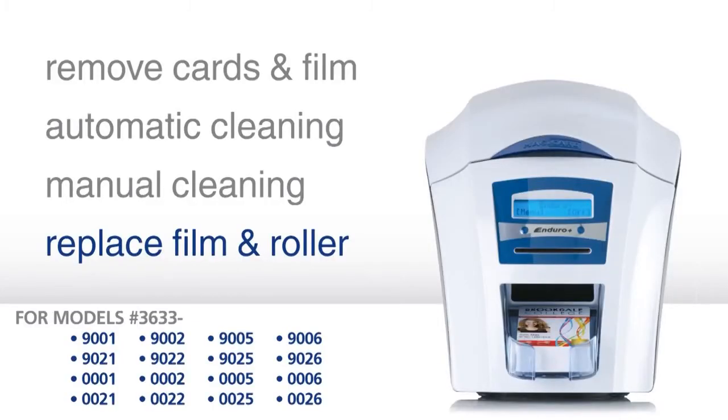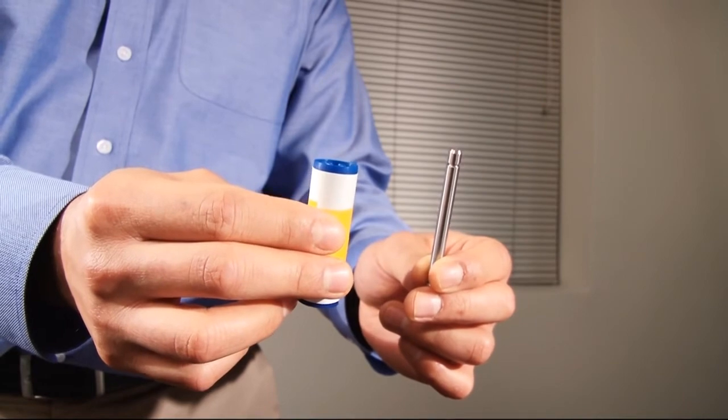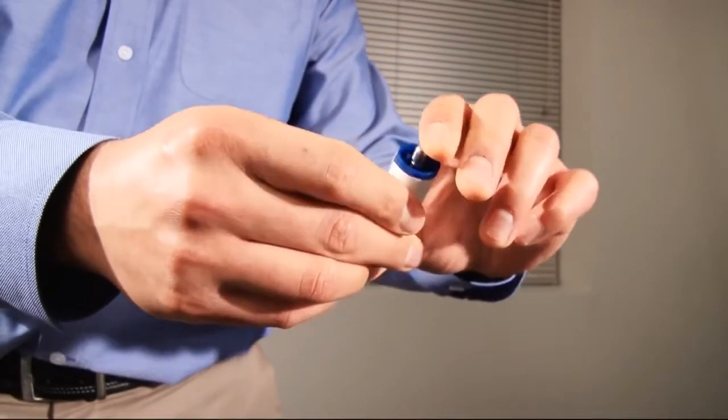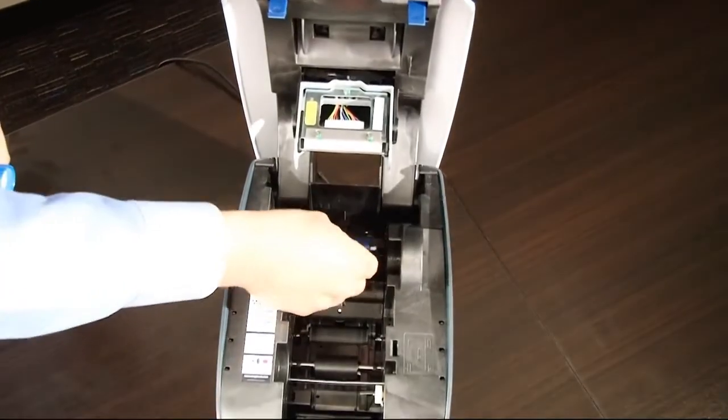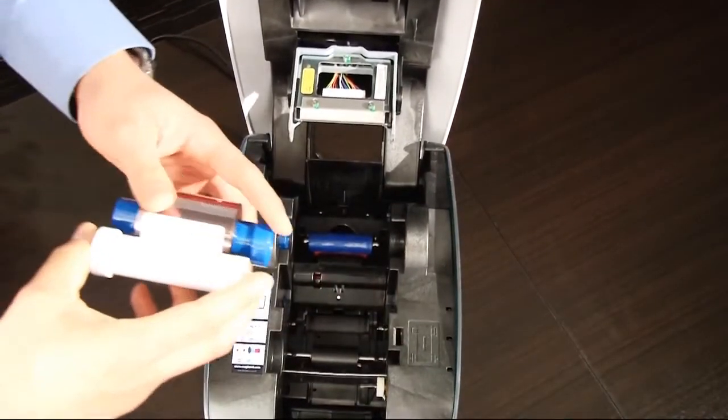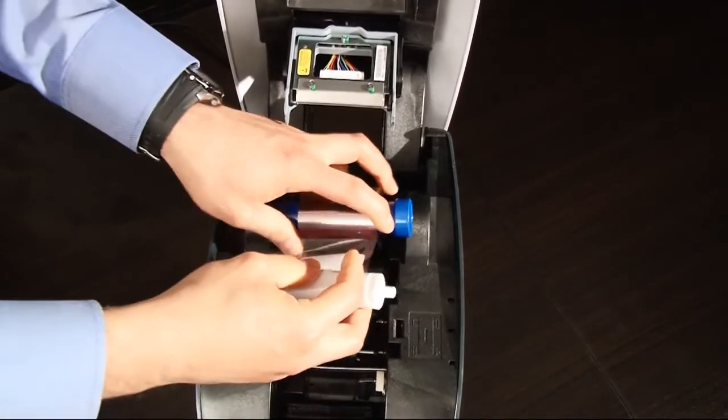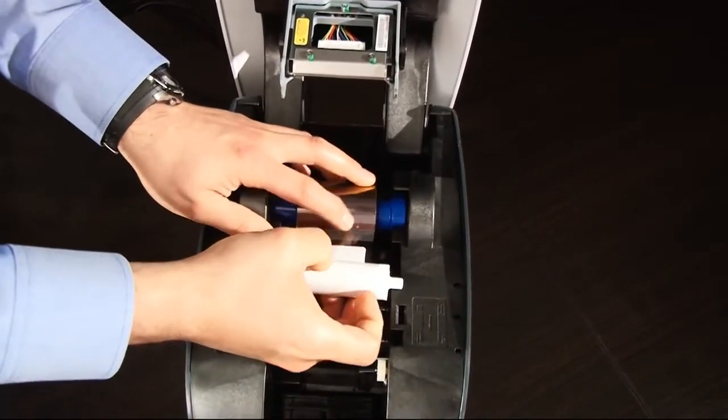The final step in cleaning is to install a new blue sticky roller into the printer and replace the dye film. The blue roller removes dust and debris from the cards during printing and is essential in preventing damage to the unit. Remove the blue roller from the dye film box and insert the metal bar which you set aside earlier. Unwrap the roller and snap it into place directly above the orange roller towards the back of the unit. Place the dye film into the printer exactly as shown.